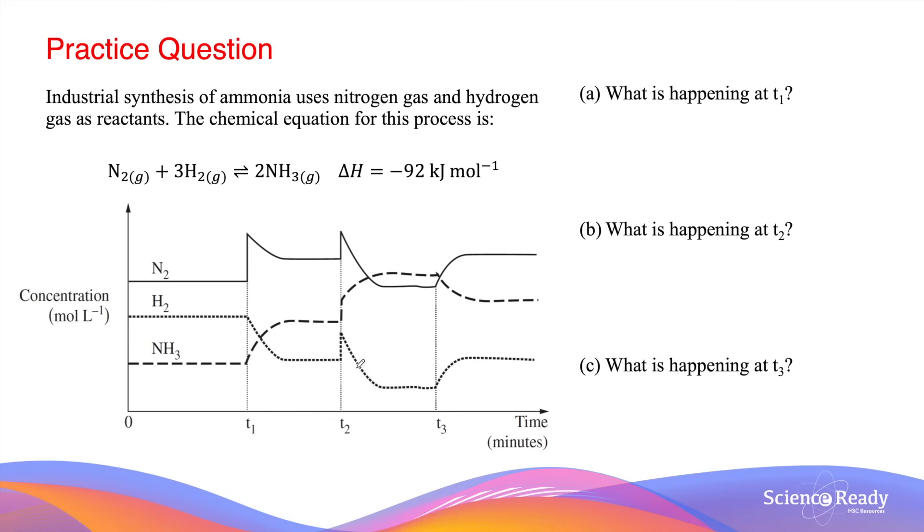Now, let's move on to T2. At T2, the concentration of all the three gases suddenly increase, as you can see by the spiking appearance of the graph.